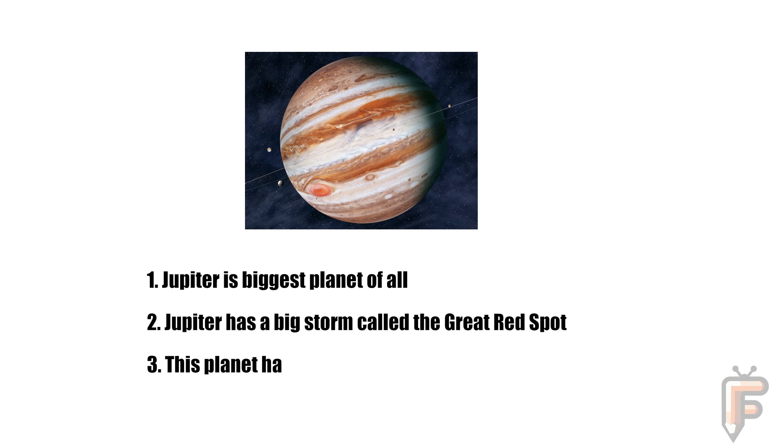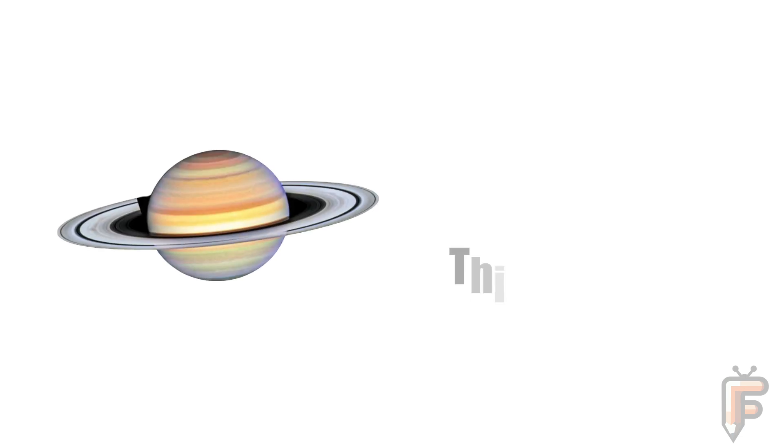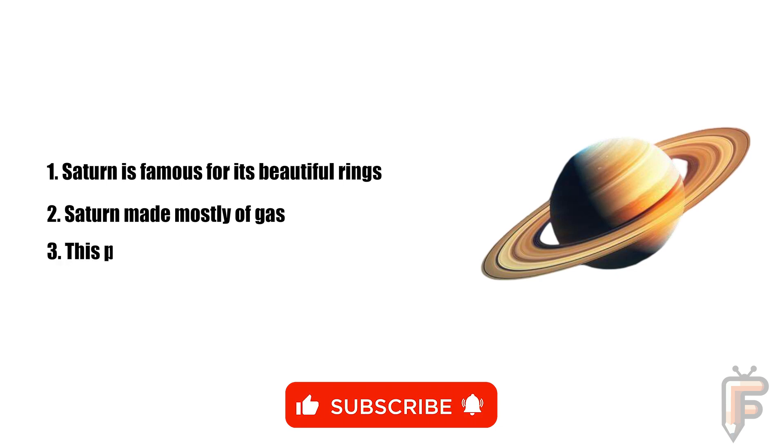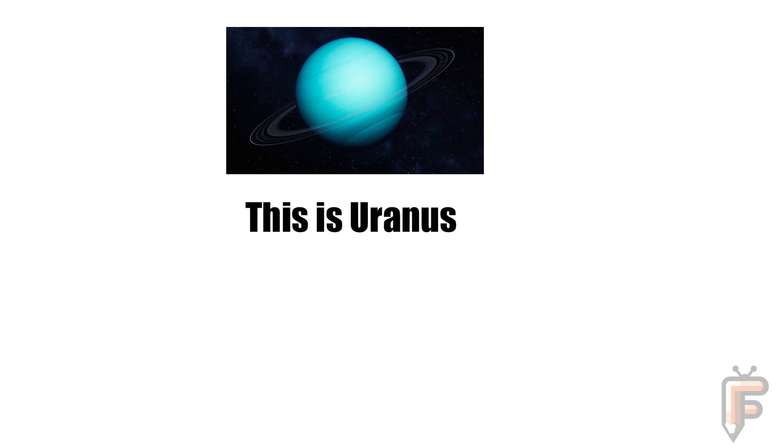This is Saturn. Saturn is famous for its beautiful rings. Saturn is made mostly of gas. This planet has 274 moons. This is Uranus. Uranus spins on its side. Uranus has a bluish-green color. This planet is very cold and has faint rings.